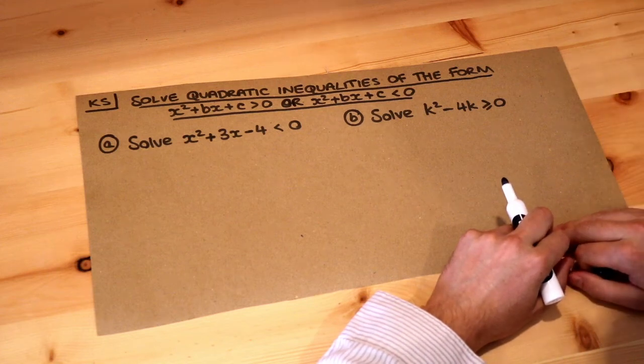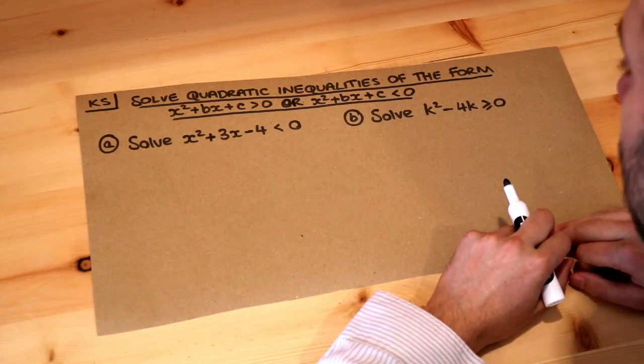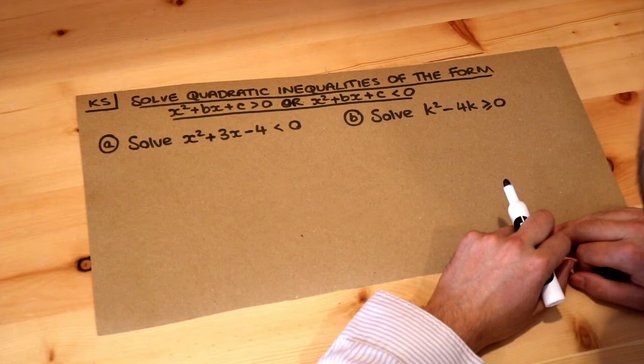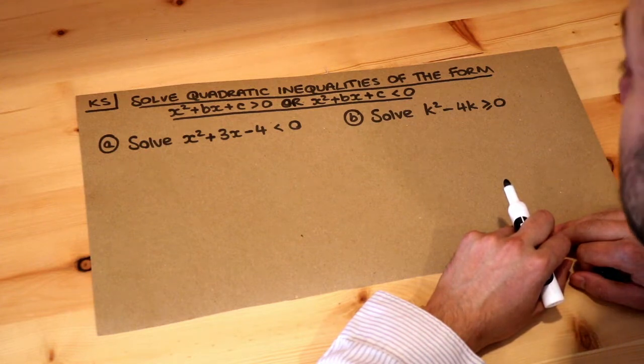Hello and welcome to this Dr Ross Mass key skill video on solving quadratic inequalities of the form x squared plus bx plus c is greater than zero or x squared plus bx plus c is less than zero.